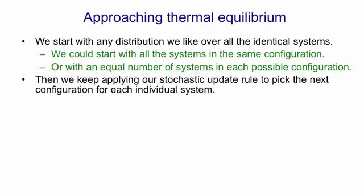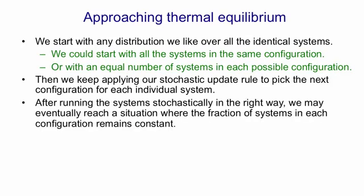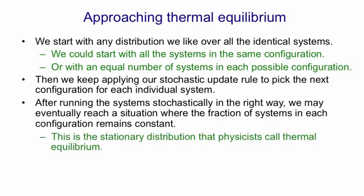Then we're going to keep applying our stochastic update rule, which in the case of a stochastic Hopfield net would mean you pick a unit, you look at its energy gap, and you make a random decision based on that energy gap about whether to turn it on or turn it off. Then you go and pick another unit and so on. We keep applying that stochastic rule, and after we've run the system stochastically in this way we may eventually reach a situation where the fraction of the systems in each configuration remains constant. In fact that's what will happen if we have symmetric connections. That's the stationary distribution that physicists call thermal equilibrium.